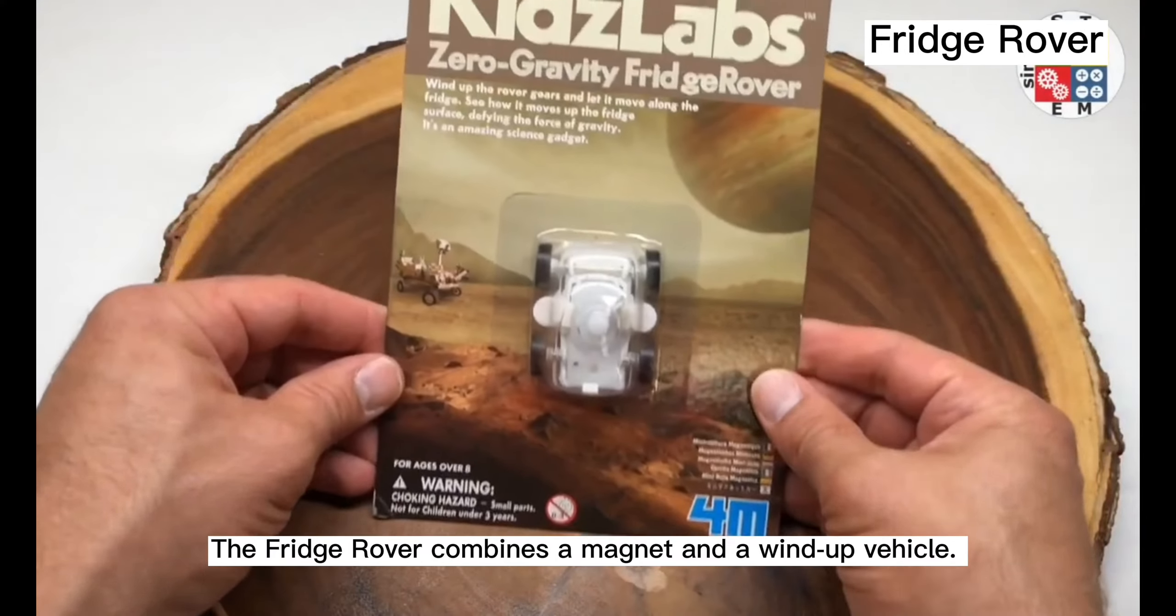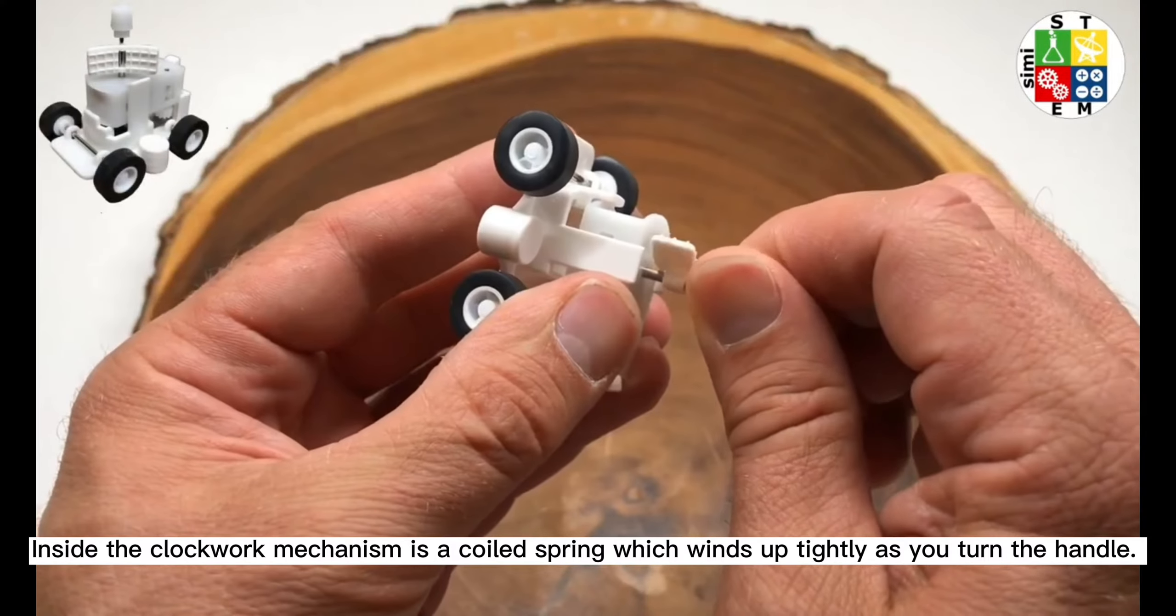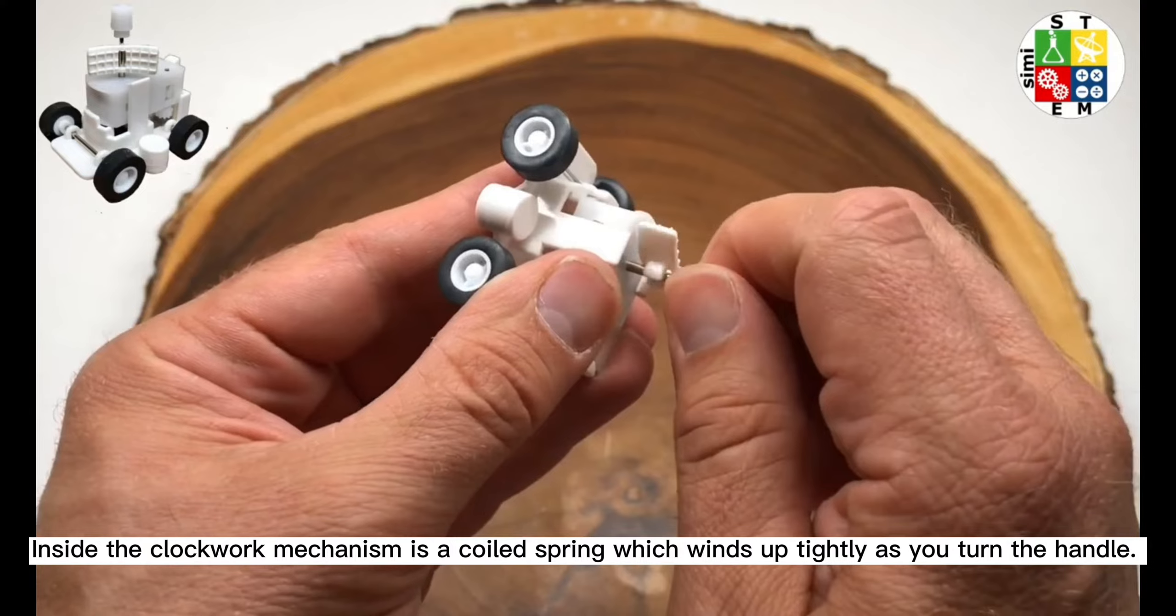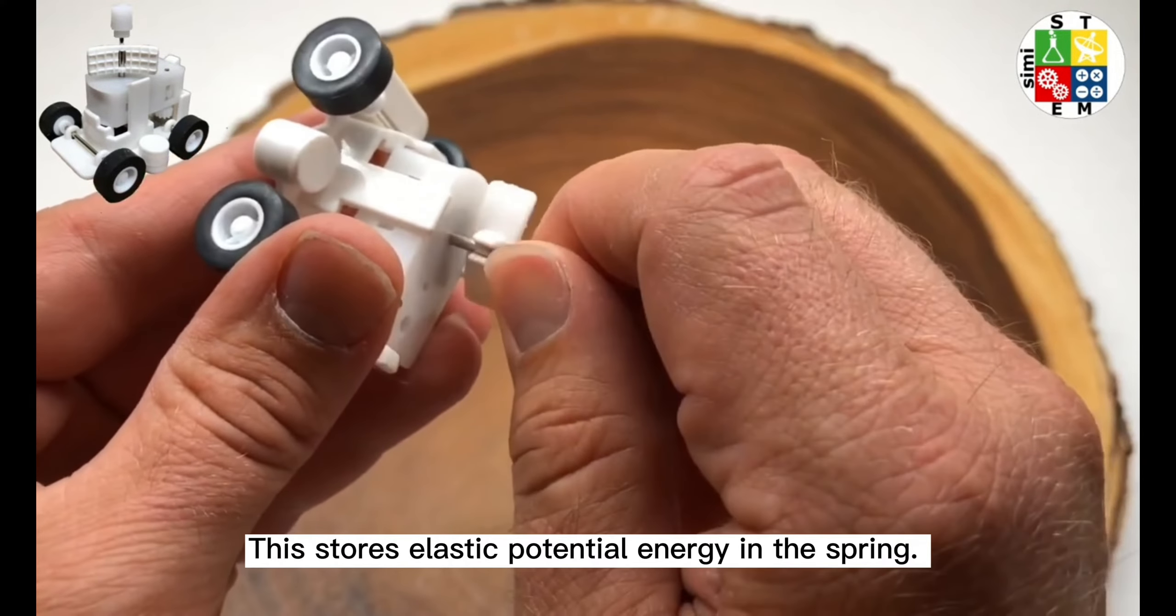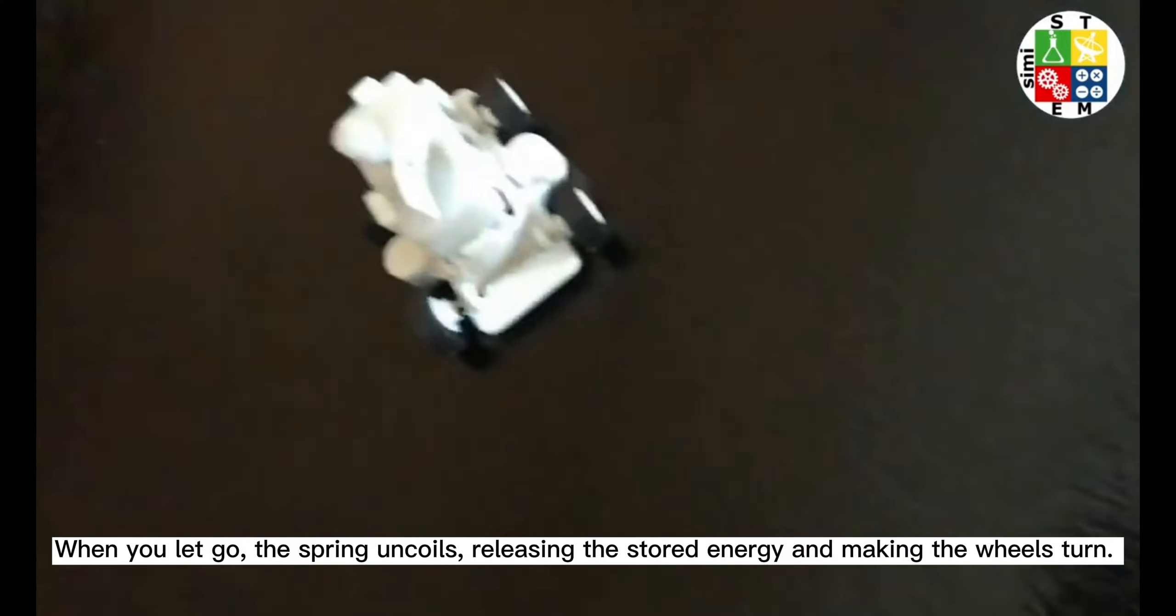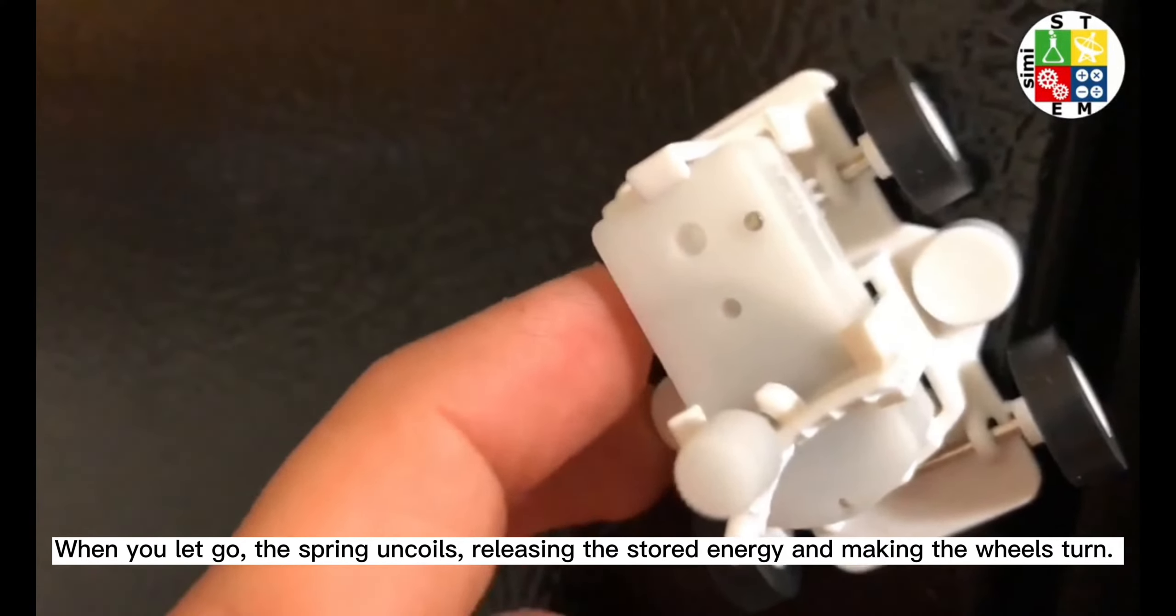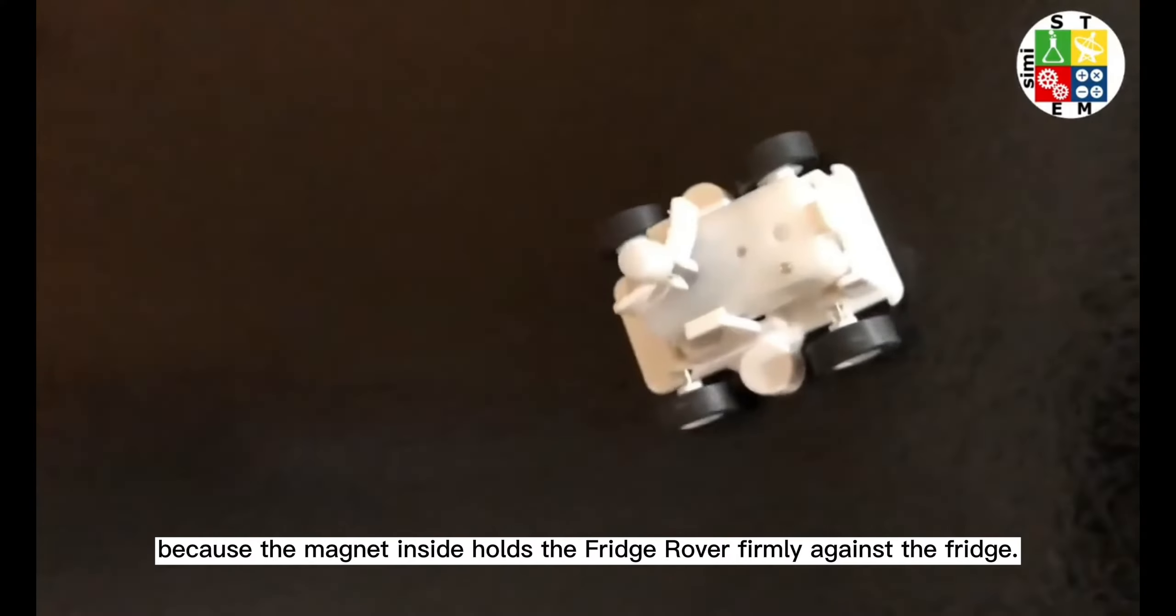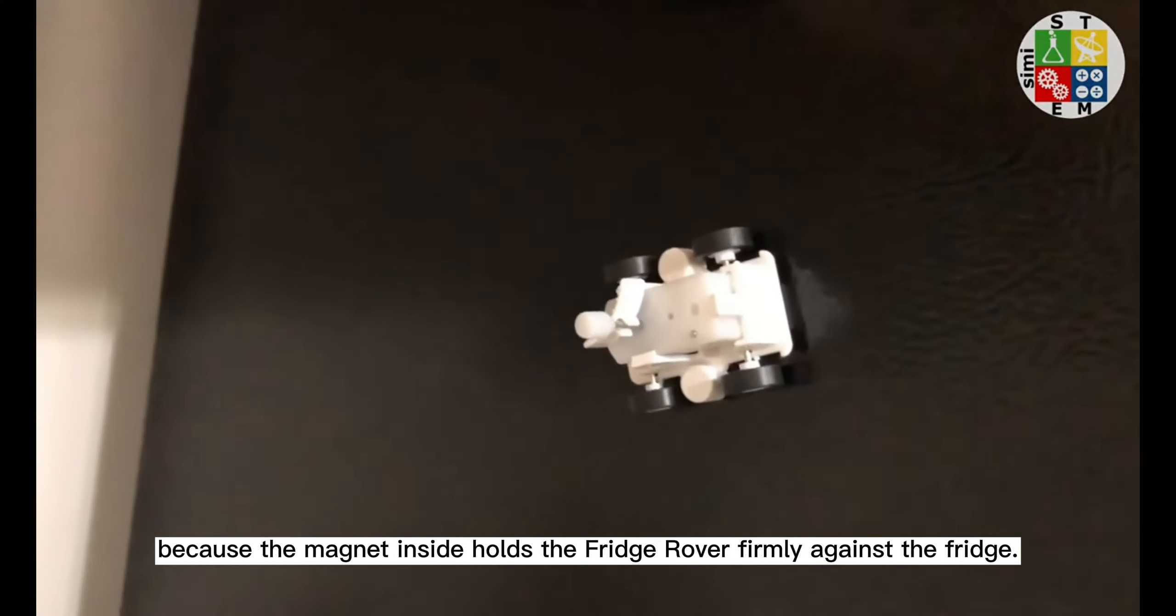The fridge rover combines a magnet and a wind-up mechanism. Inside the clockwork mechanism is a coil spring which winds up tightly as you turn the handle. This stores elastic potential energy in the spring. When you let go, the spring uncoils, releasing the stored energy and making the wheels turn. The wheels can grip the surface of the fridge without falling because the magnet inside holds the fridge rover firmly against the fridge.